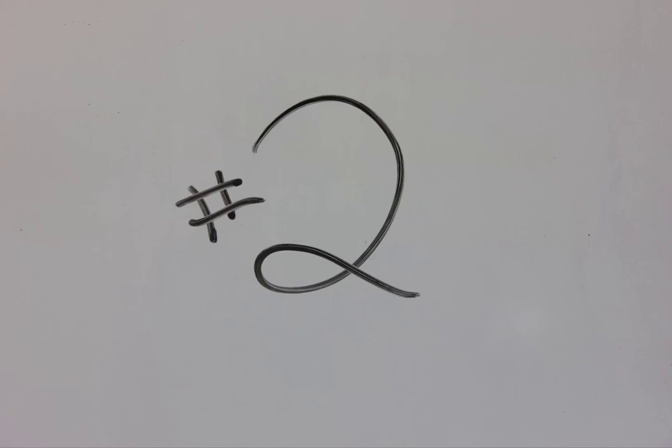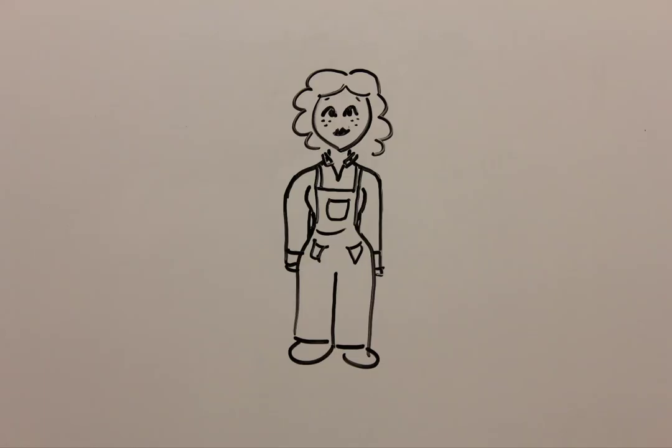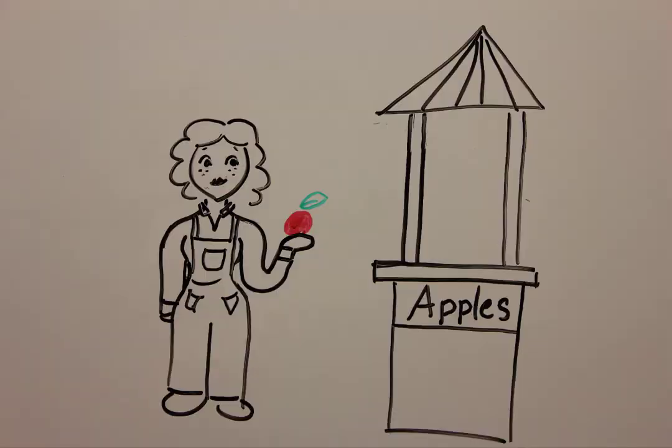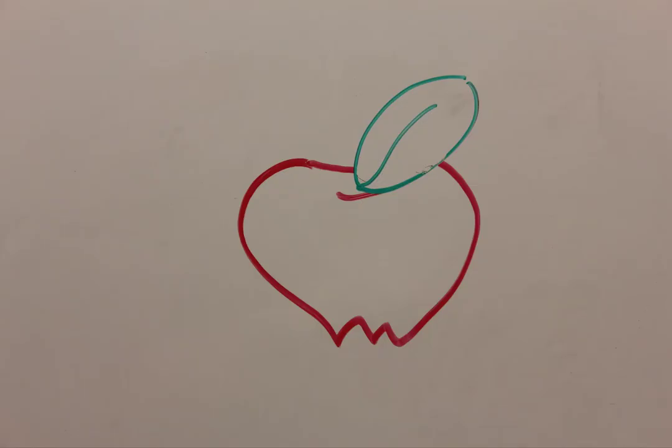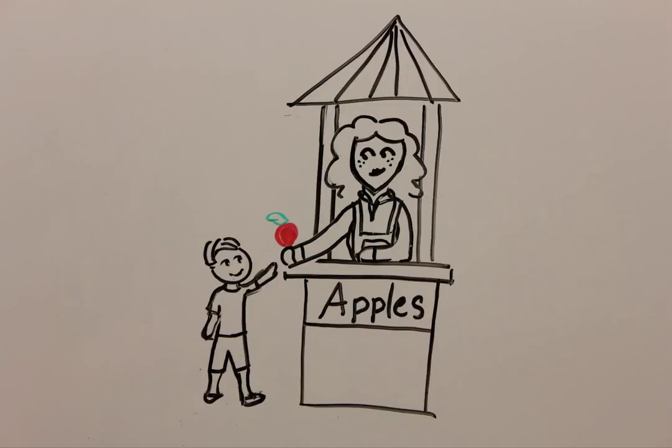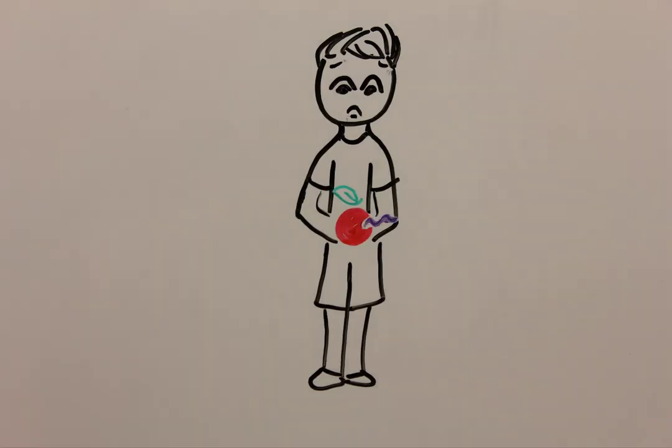The second example is farmer Susan. Susan grows apples and sells them at a local farmer's market. This year, some of her apples got worms in them. But because she needs the money, Susan chooses some of the best looking apples to sell at the farmer's market. Little Matt buys one of the apples, and after he gets home, he finds a worm in it.